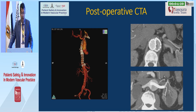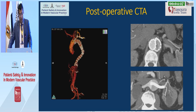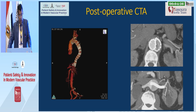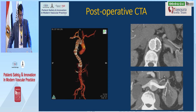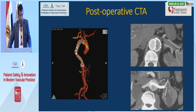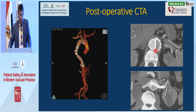One-month postoperative CTA shows complete disappearance of flow in the thoracic part of the false lumen. There is increase in the diameter of the true lumen and decrease in the diameter of the false lumen at the level of the celiac axis, and good opacification of the stent and left renal artery.